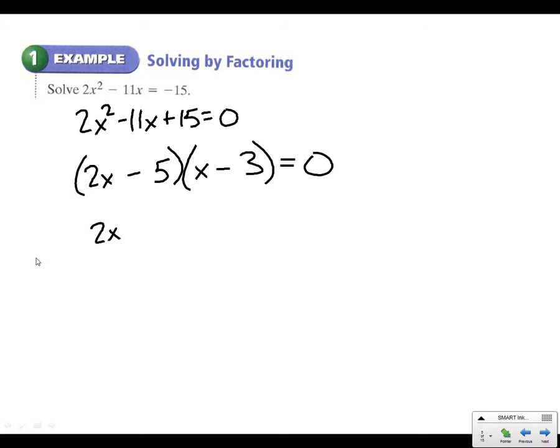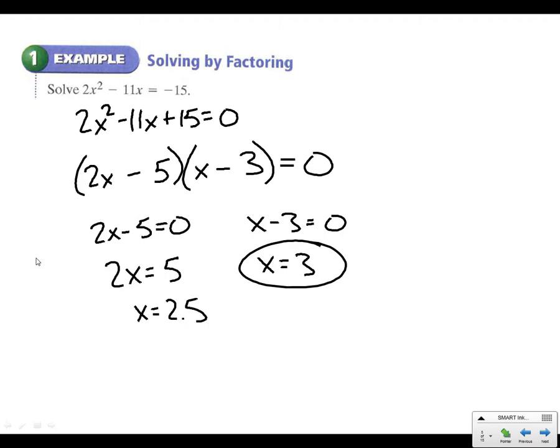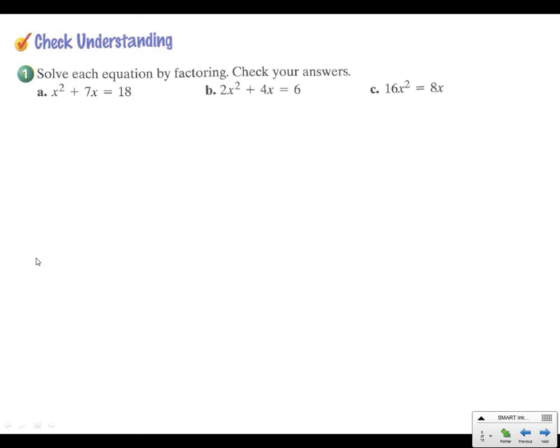So now let's finish this. We get to say 2x - 5 equals 0, and x - 3 equals 0. Both parentheses equal 0. So 2x equals 5, and x equals 2 and a half, x equals 3. Two answers on this one that are going to make your solution work. See if you can do this for a, b, and c.